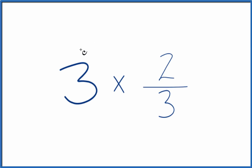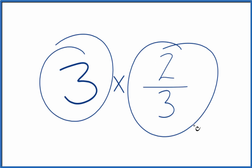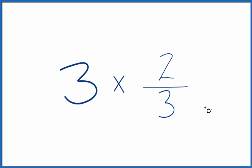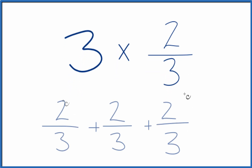So how do you multiply 3 times 2 thirds? There are two ways you could think about it. One is that you have 3 of these 2 thirds. You can write that like this — so we have 3 copies of 2 thirds: 1, 2, 3, and we add them together.